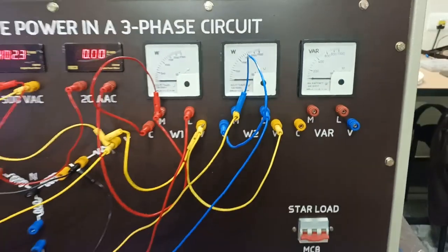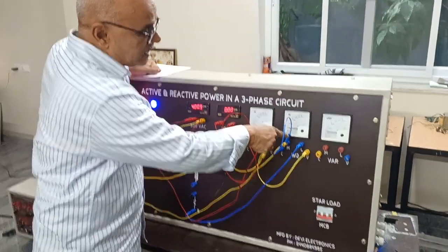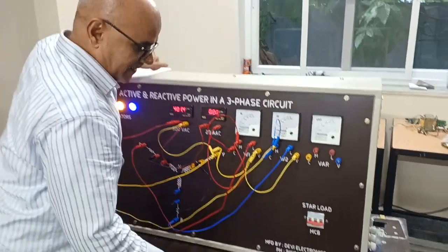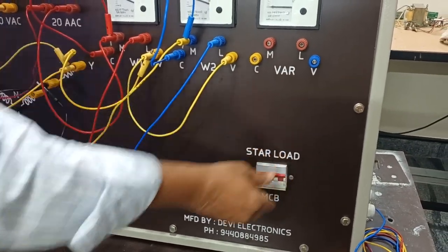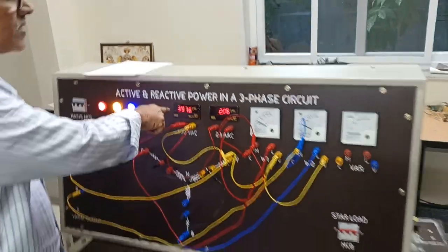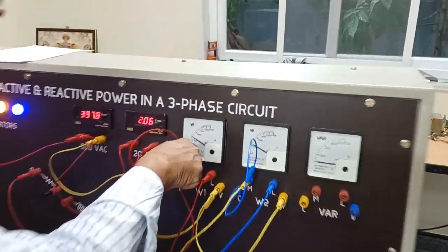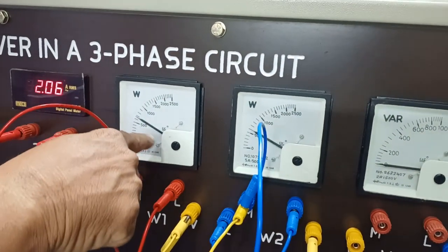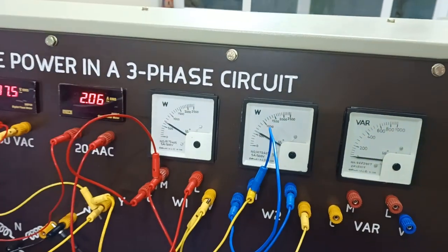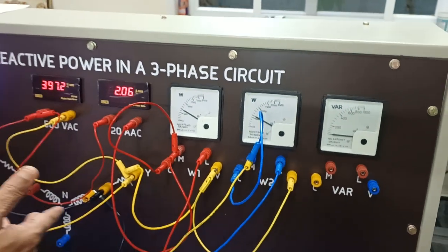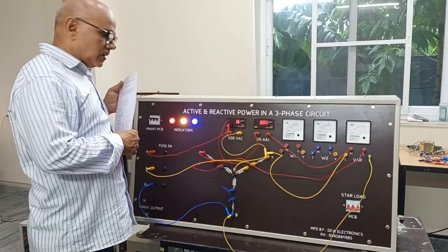In this case I have used two wattmeters, R with respect to Y and B with respect to Y. Now I am going to apply load. At 400 volts, the current is 2.06 amps. W1 is showing around 650 to 700 watts, and W2 is showing 600 watts. If you sum them, you will get the total power. We will do calculations later.